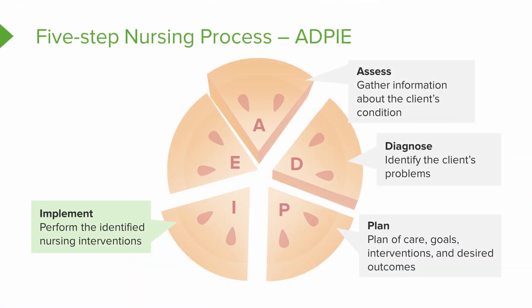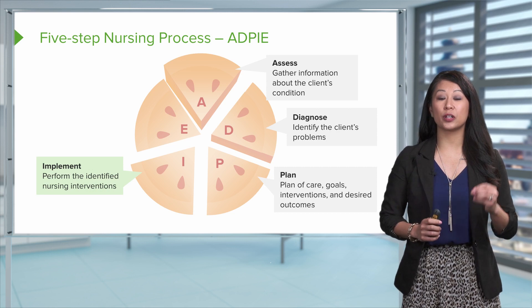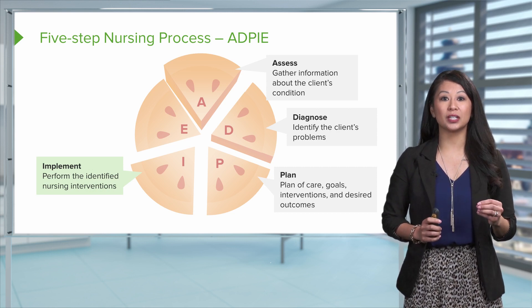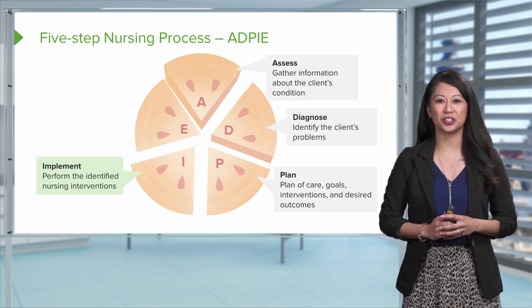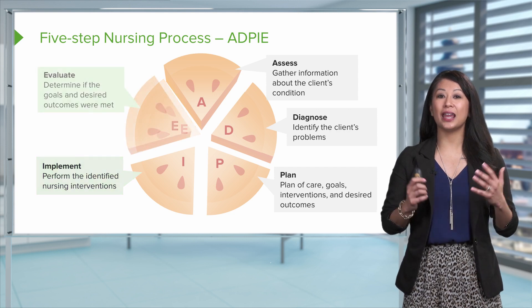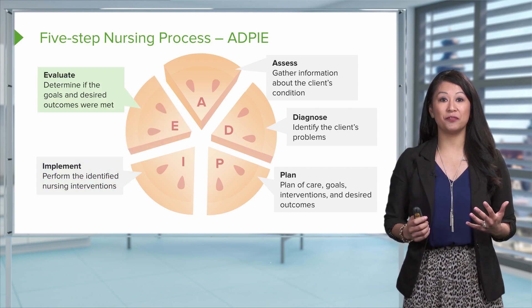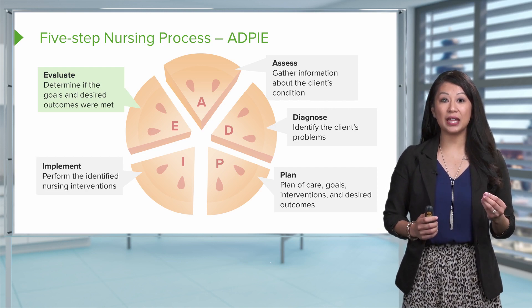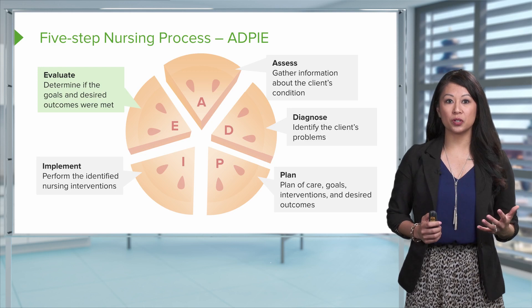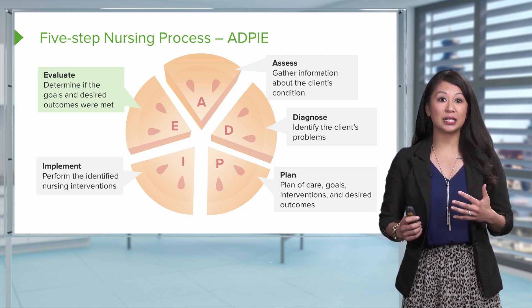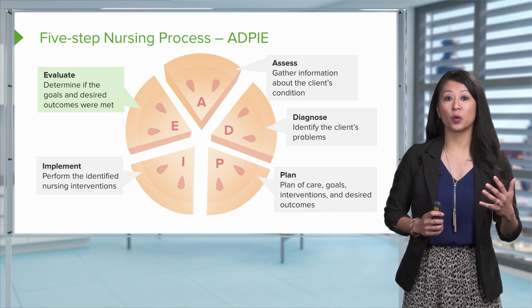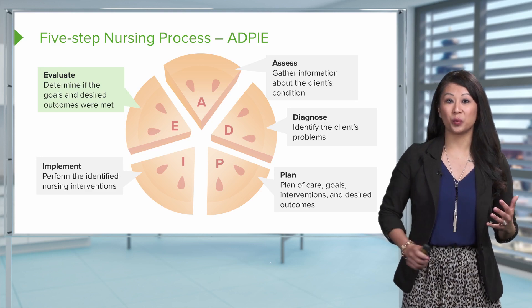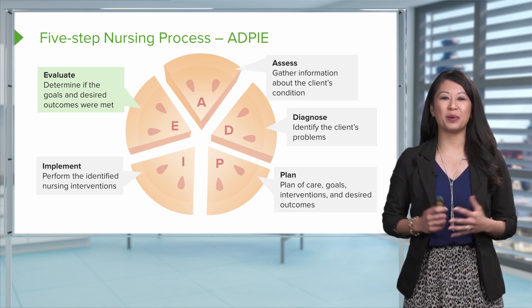Next is what I call the action phase — this is the I of the PIE, the implementation phase. This is where we actually perform those interventions to help improve our patient's condition. And lastly, and most importantly, is the evaluation phase. This is where we determine if, in that planning phase, we met those goals or not. Do we need to change things up? Were those outcomes met? If not, we restart the ADPIE process.